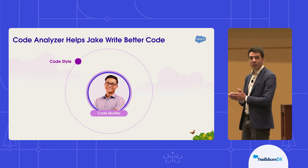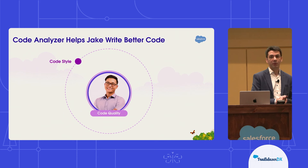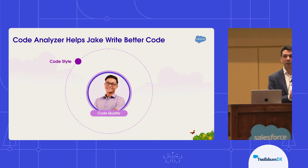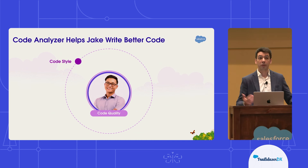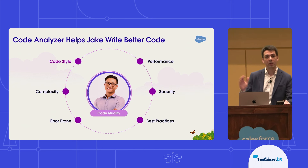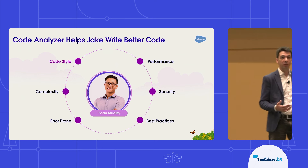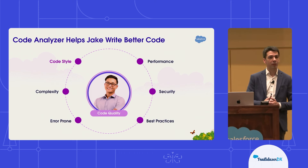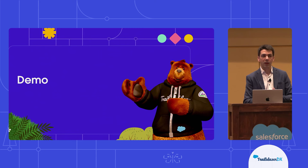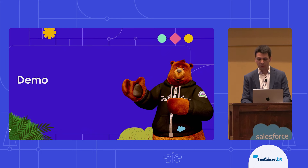Jake's team is going to turn to Code Analyzer to help with this problem. Code Analyzer is our open source solution that allows people like Jake to identify problems earlier in code, as we saw earlier in Ananya's demo. Jake's team is particularly concerned with identifying code styling issues — they want to make sure that if a developer looks at a piece of code they've never looked at before, they can easily understand it and fix any particular issues. Beyond that, Code Analyzer also helps ensure that code is performant, secure, follows best practices, is not prone to errors, is not overly complex, and can be easily maintained going forward. I want to walk you through how Jake's team have set themselves up for success to use Code Analyzer as part of their DevOps process.